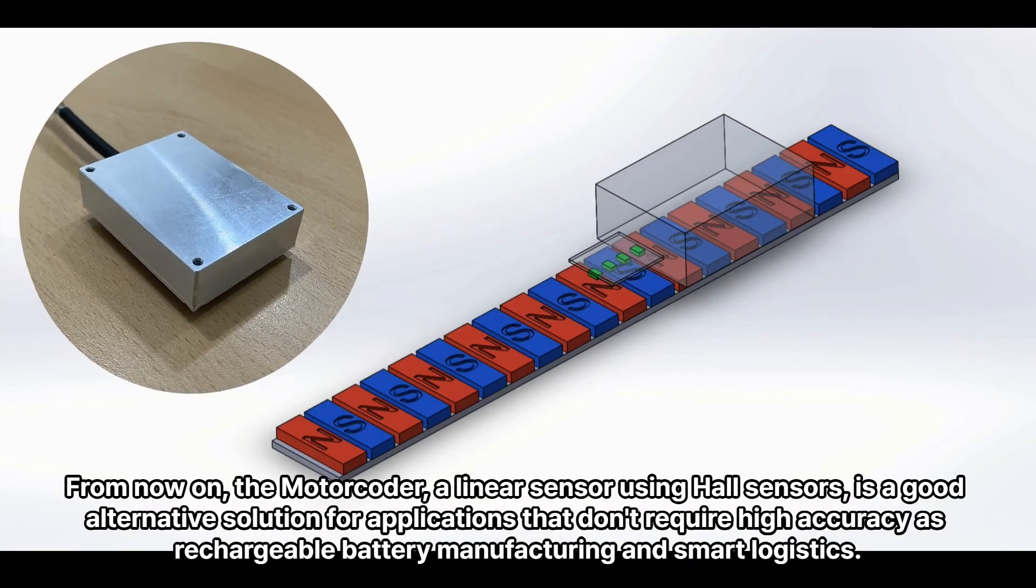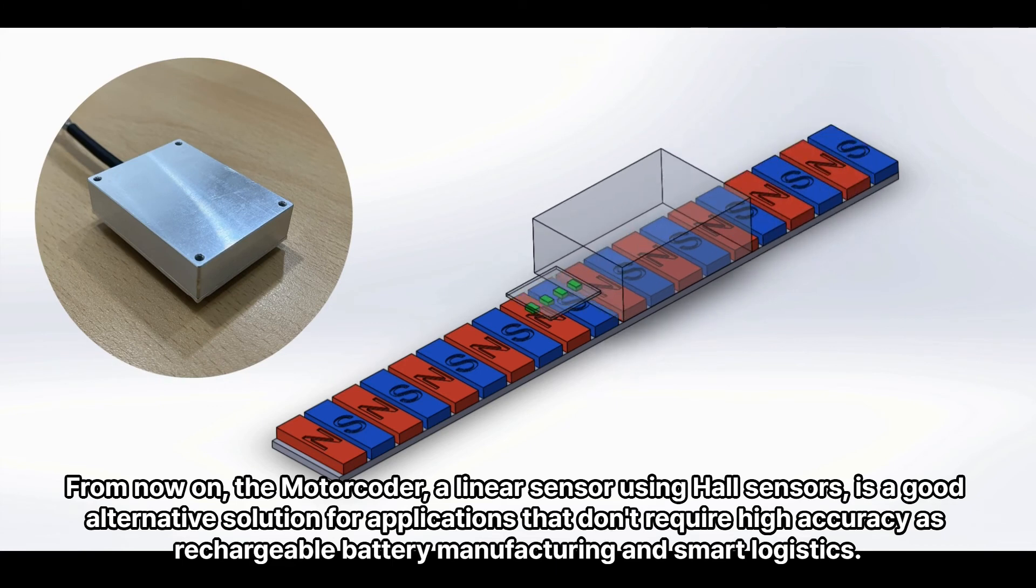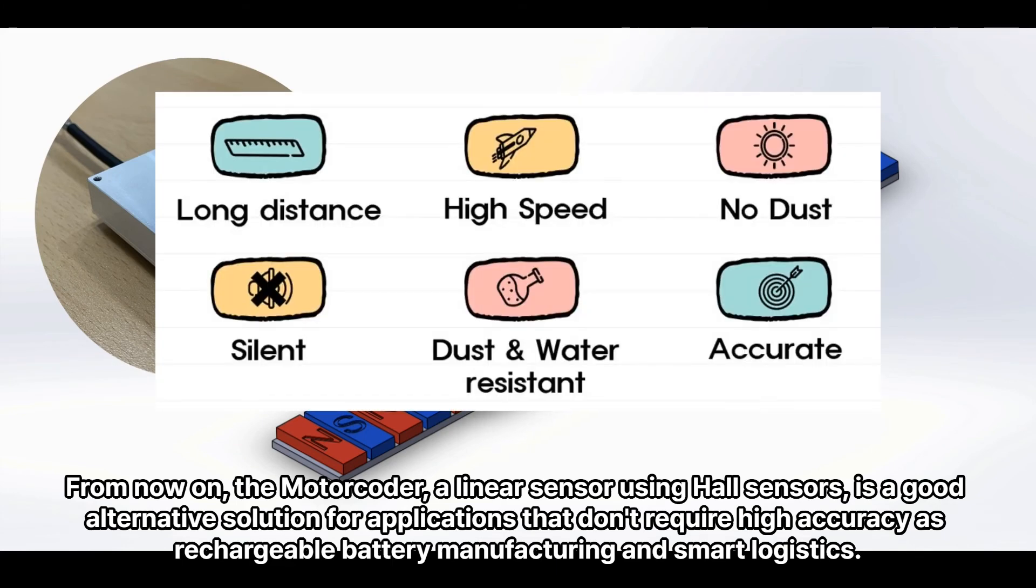From now on, the motor coder, a linear sensor using Hall sensors, is a good alternative solution for applications that don't require high accuracy as rechargeable battery manufacturing and smart logistics.